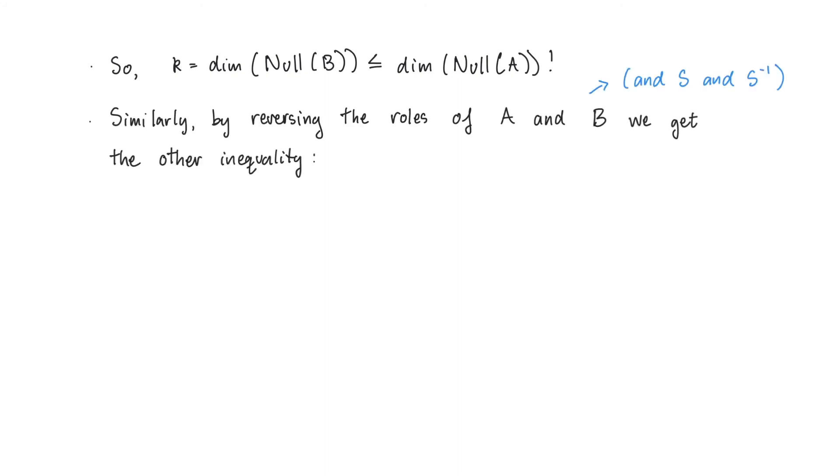Similarly, if we reverse the roles of A and B, and S and S inverse, because inverses come in pairs, we can get the other inequality. That is, the dimension of the null space of A is less than or equal to the dimension of the null space of B. You should check this if you don't believe me.